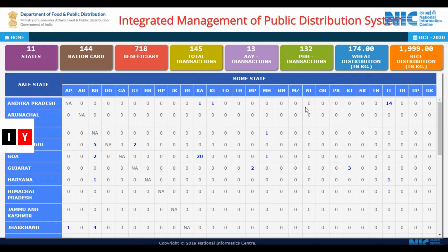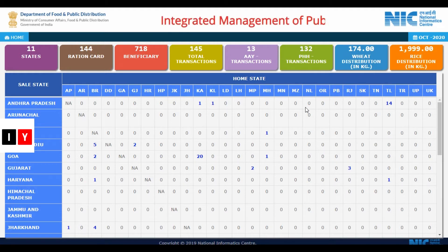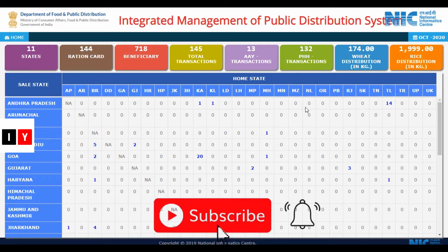Welcome to India One Nation One Ration Card — application form, Aadhaar card state list and complete dashboard. The central government has announced the launch of a nationwide One Nation One Ration Card for all citizens of India, including migrant workers and poor people. The standard format for applying online is designed by the central government, which is to be followed for issuing fresh ration cards.